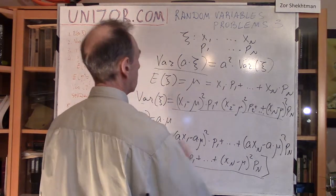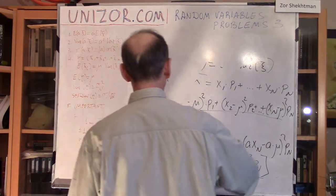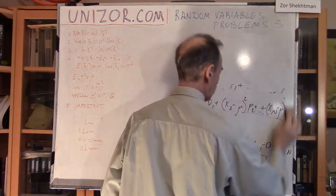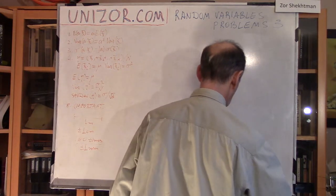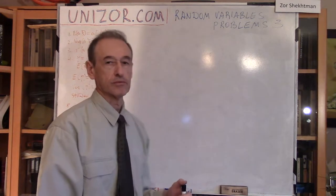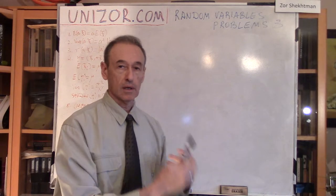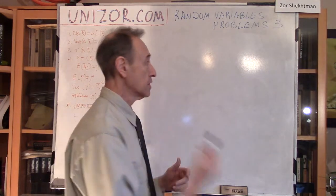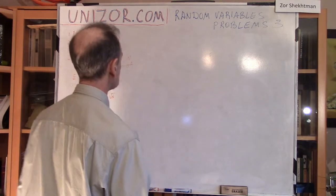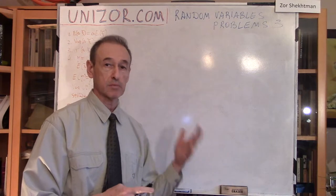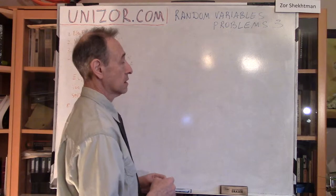There is absolutely nothing ingenious about this type of proof. However, I would like to make the point that the expectation and variance can be taken from a constant multiplied by our random variable: the expectation is multiplied by the same constant, and the variance is multiplied by the square of that constant.